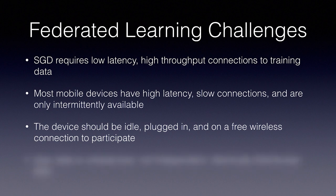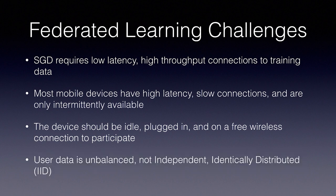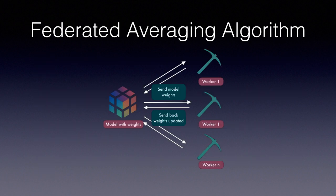In addition, user data tends to be unbalanced. It's not IID, or independent identically distributed. A single user's data is generally not representative of the population distribution. In addition, some users use the app much more than others, leading to varying amounts of local training data. To overcome these limitations, Google has developed a federated averaging algorithm, which can train deep networks using 10 to 100 times less communication compared to classic distributed training. The key is using the processing power in modern mobile devices to generate higher-quality updates than simple gradient steps. This means the quantity of updates can be reduced.